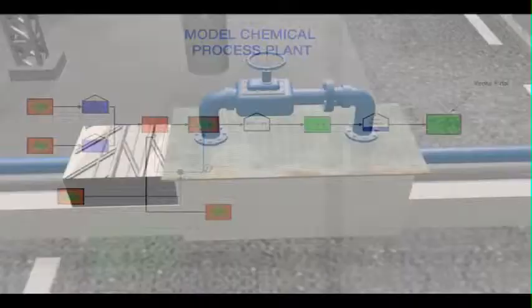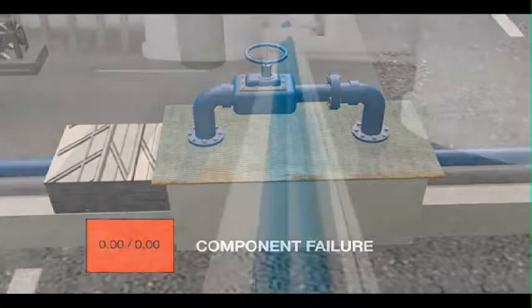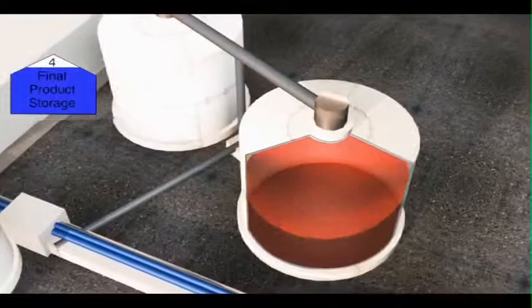With any processing system, you experience internal component failures. For example, a valve breaks causing a unit to slow down or stop. This event impacts the product flow, which can then impact other units and storage tanks.